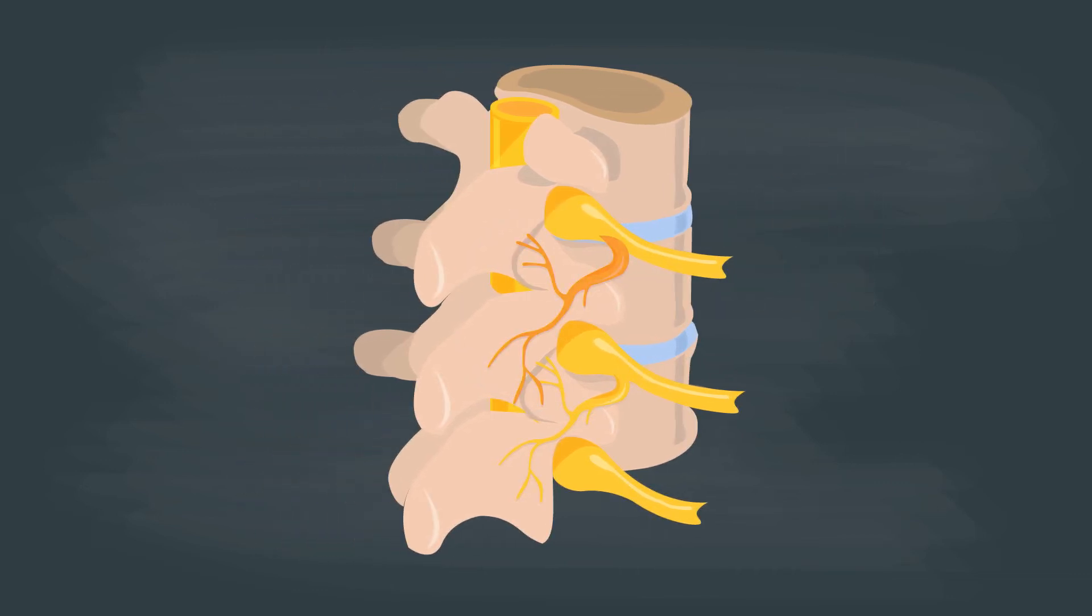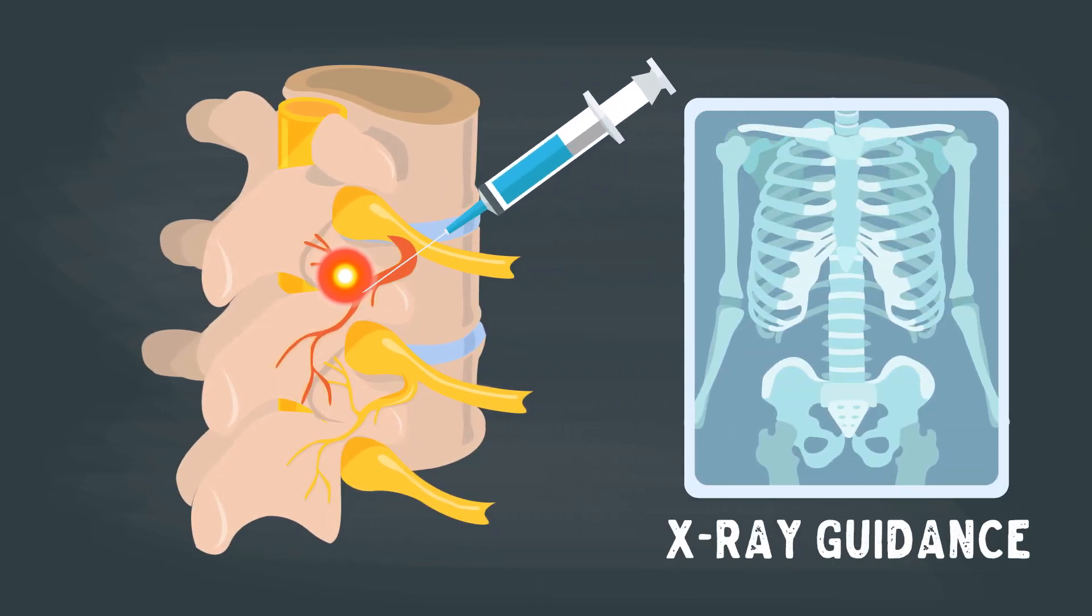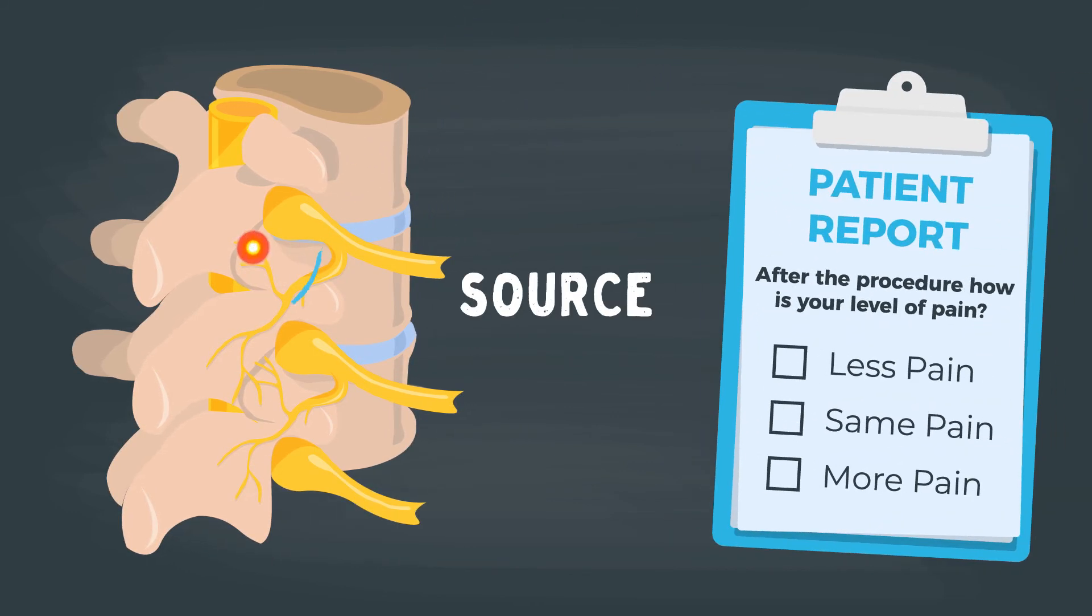For people with facet joint pain, we can safely block these medial branch nerves with a numbing medicine. This is also done with a small needle under x-ray guidance. If a patient reports meaningful benefit with blocks of these medial branch nerves, then we know the pain is coming from the joints.